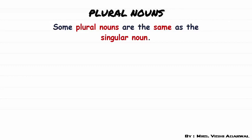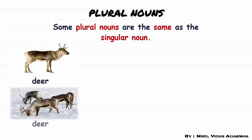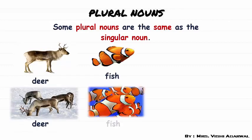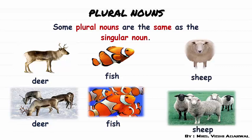Some plural nouns are the same as the singular nouns — that is, we don't need to change them into plural form. For example: deer stays deer, fish stays fish, sheep stays sheep, bison stays bison.